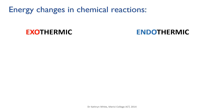So remember: exo means outside, so heat goes to the outside — in these reactions, the surroundings get hotter. And endo, or inside, means heat goes to the inside — the chemicals themselves. That heat doesn't actually go towards making the chemicals hotter; instead it's stored as chemical energy in the bonds of the newly formed molecules. So energy disappears from the surroundings, gets locked up in the chemical bonds, and the surroundings get colder.